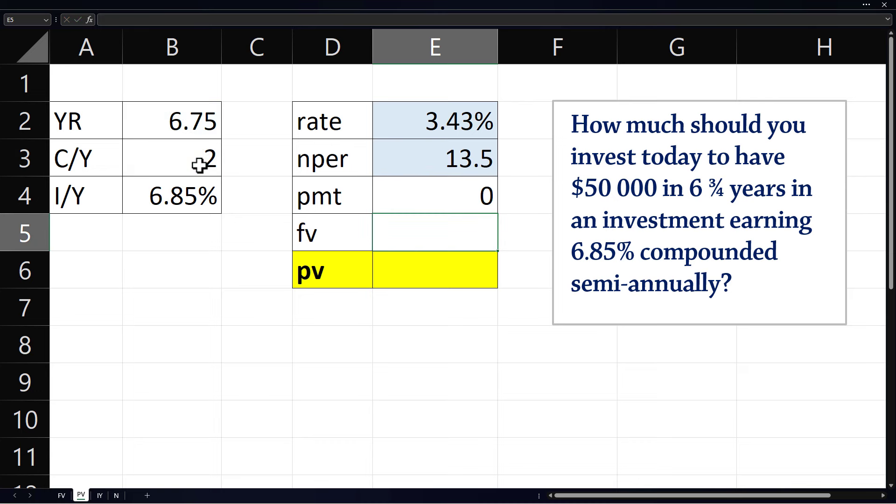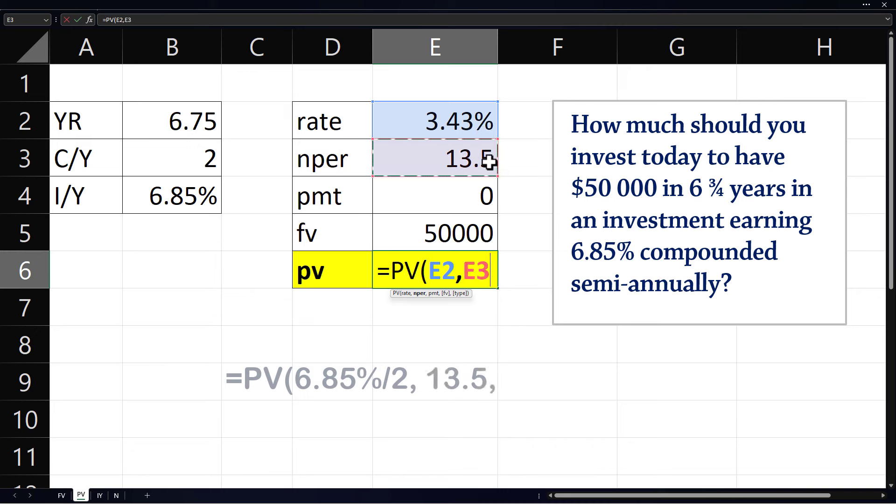Periodic payment is 0, and we want a future value of 50,000. To compute the present value, type equals PV and tab to select. Select periodic rate, comma, nper, comma, payment, comma, and then the future value, and enter.